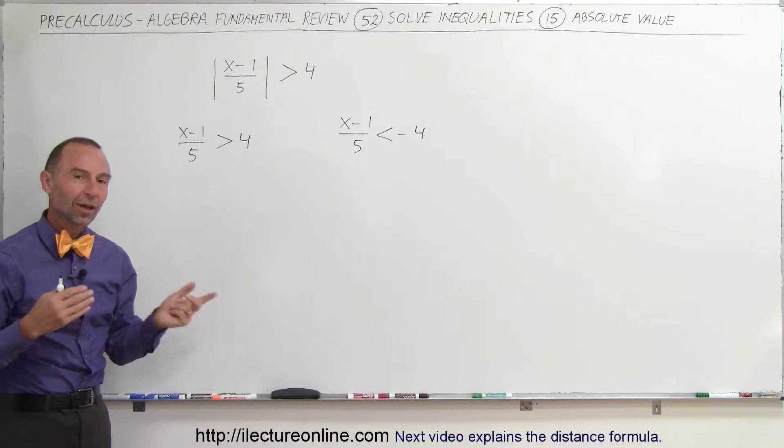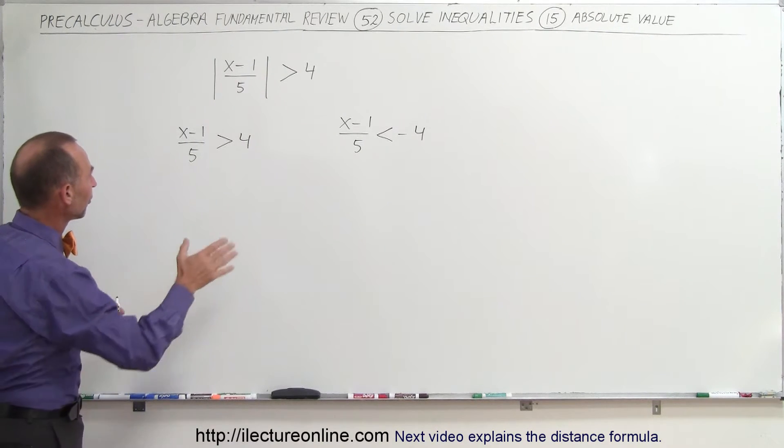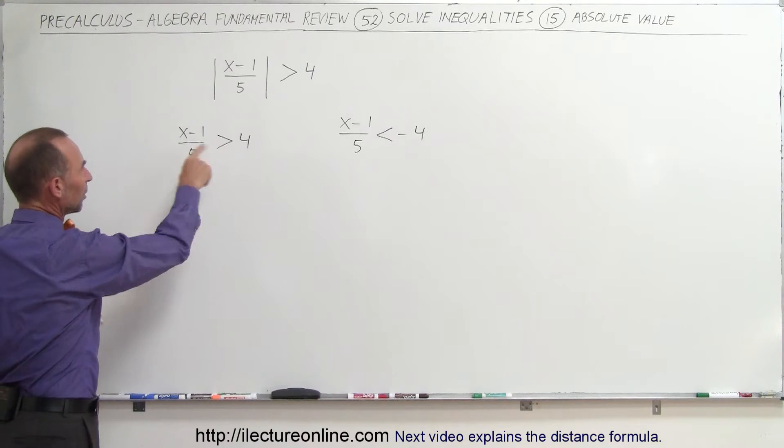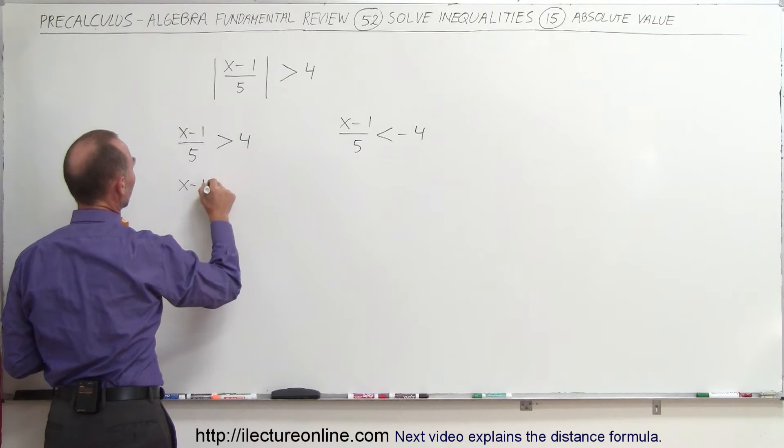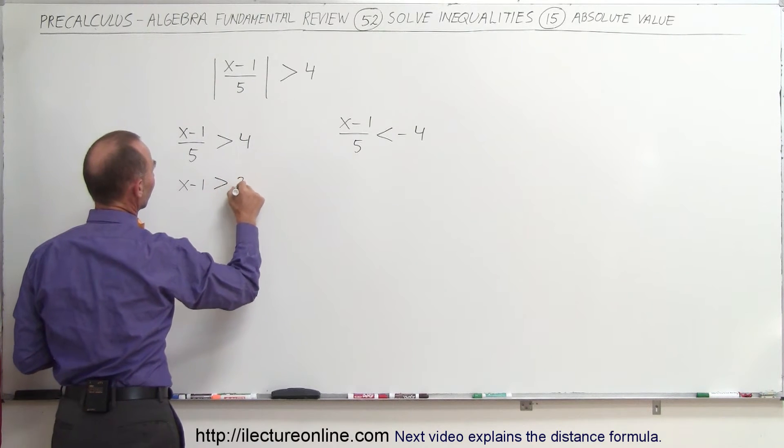Now we have to solve those both side by side. We'll take this one first. We want to multiply both sides by 5. So when we do that, we get x minus 1 greater than 4 times 5, which is 20.